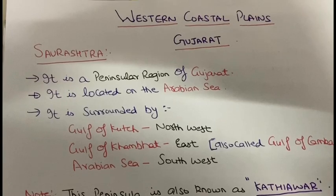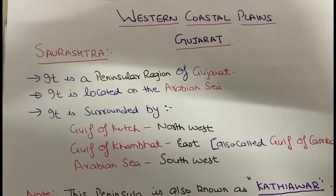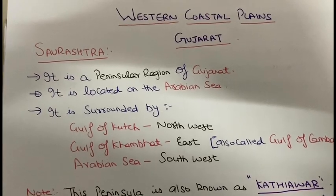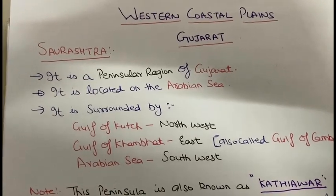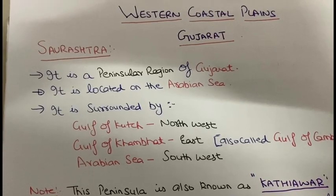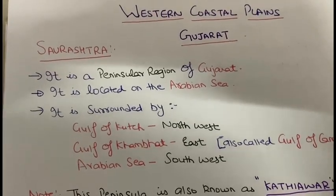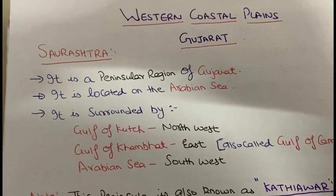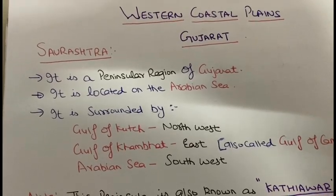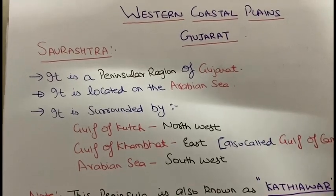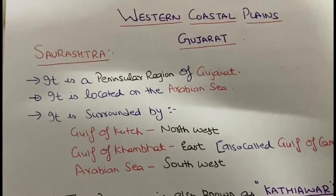In this lecture, we will see what it comprises and what is the importance of the coastal plain region located in Gujarat. First of all, we will start to know about some regions, so that we can be clear about Gujarat. The first term is Saurashtra — Saurashtra is a very important region which belongs to the state of Gujarat.